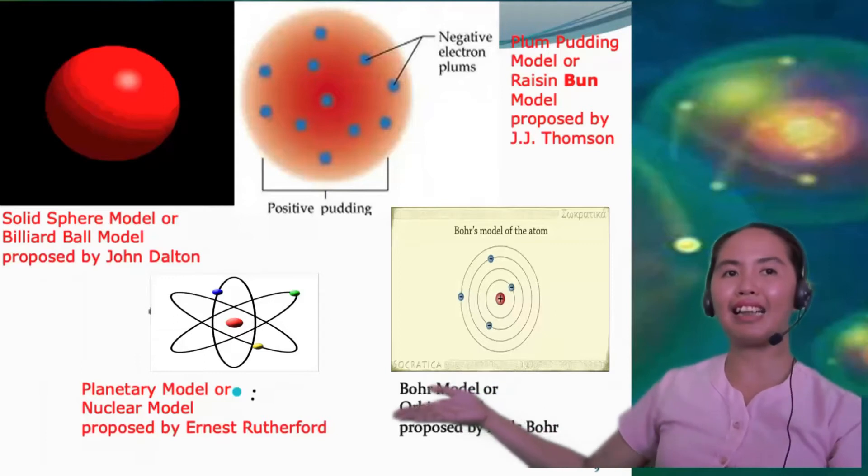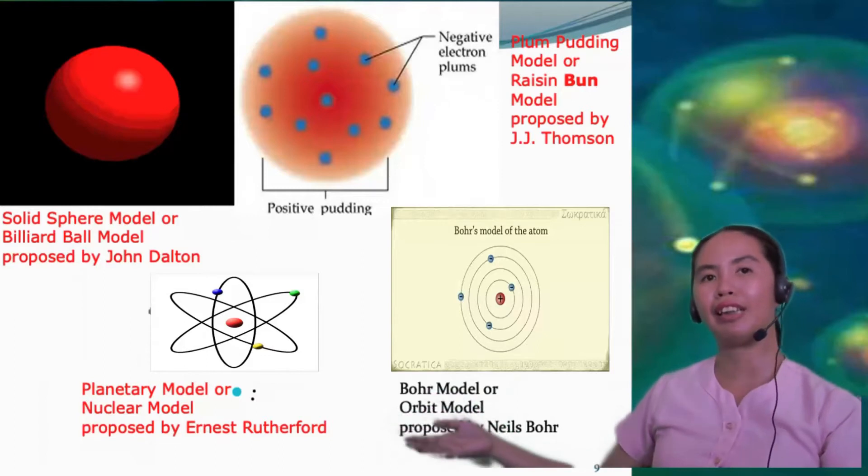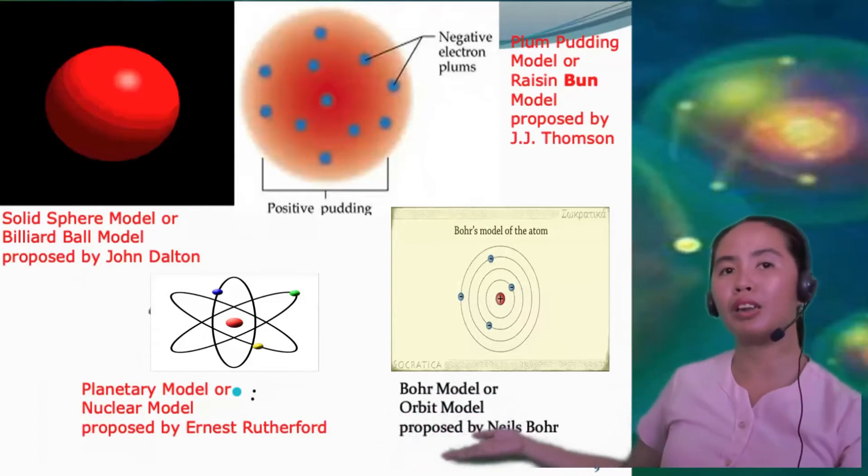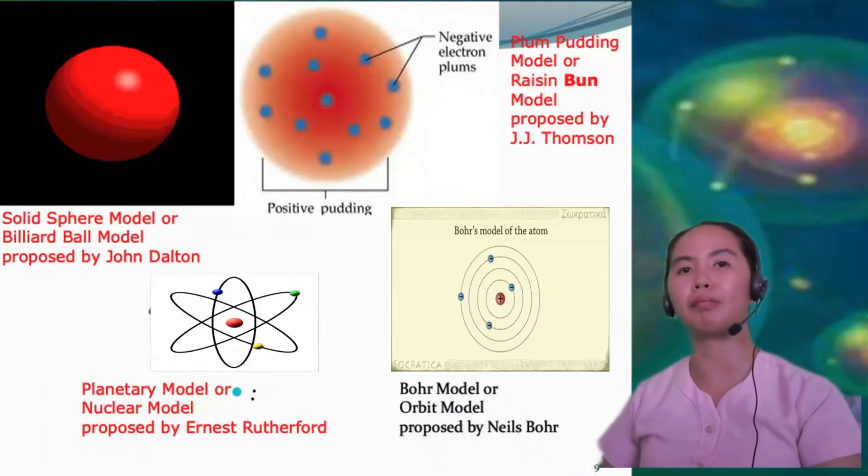This is our planetary model, or the nuclear model, which was proposed by Ernest Rutherford. And the last one, we have Bohr model, or orbit model, that was proposed by Niels Bohr.